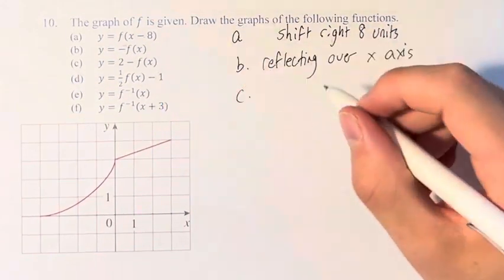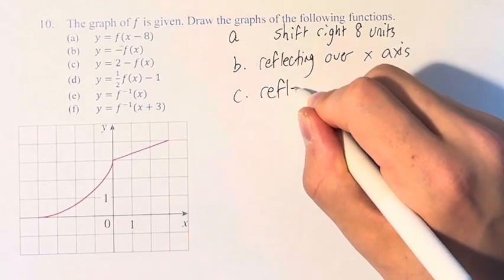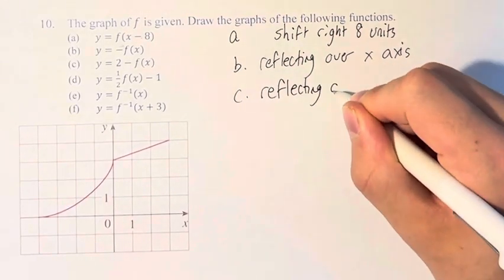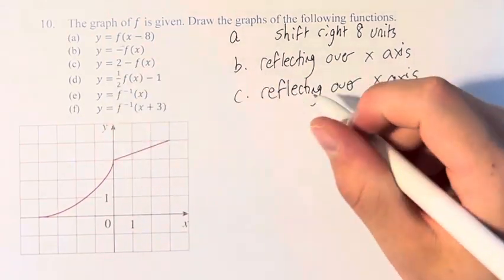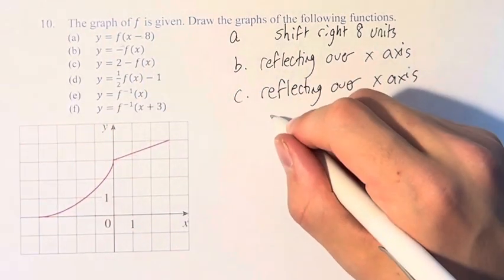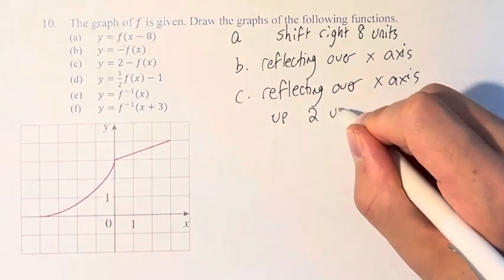For part c, we're doing the same thing, reflecting over the x-axis. And then we are adding 2. The addition is being done outside, so it's up 2 units.